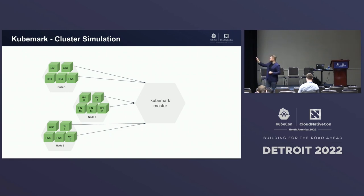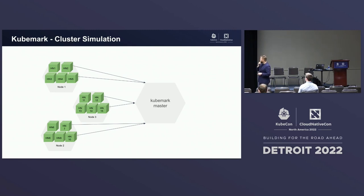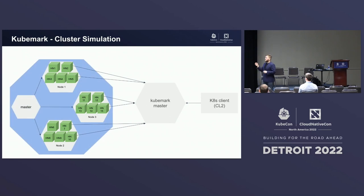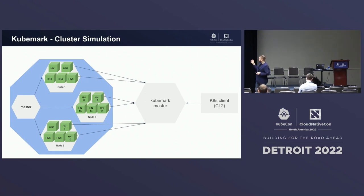In the Kubemark setup, you might have, say, 3 actual nodes and 15 hollow nodes. Those hollow nodes need to be scheduled onto real nodes, and we actually use Kubernetes itself to do that. There are two clusters: one responsible for running the hollow nodes on actual nodes, and those hollow nodes are connected to a separate master that we want to scale-test. Because of this, we can run scalability tests much more often, since it consumes far fewer resources than regular clusters.